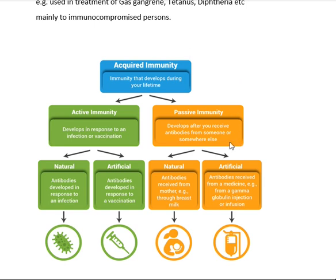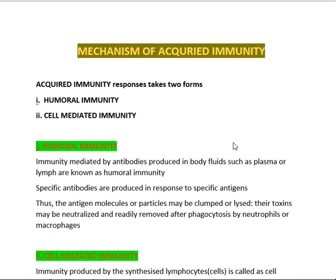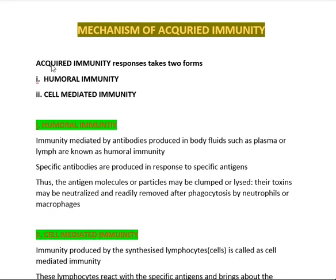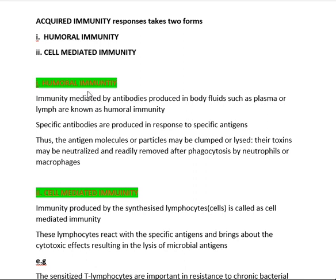The mechanism of acquired immunity responds in two forms: humoral immunity and cell-mediated immunity. Humoral immunity is immunity mediated by antibodies produced in body fluids such as plasma and lymph. Specific antibodies are produced in response to specific antigens. For example, if Salmonella typhi enters your blood, antibodies relevant to that typhoid bacteria are produced.